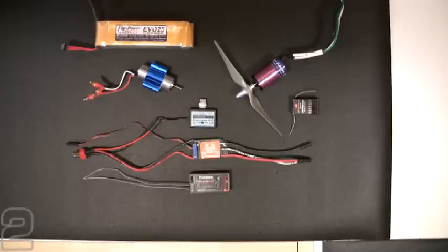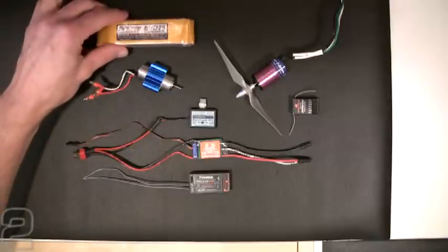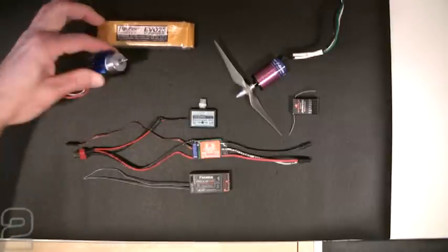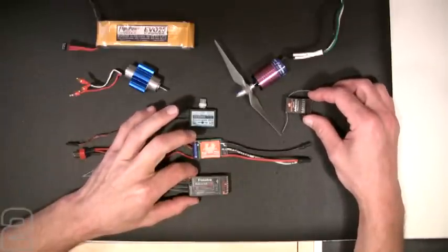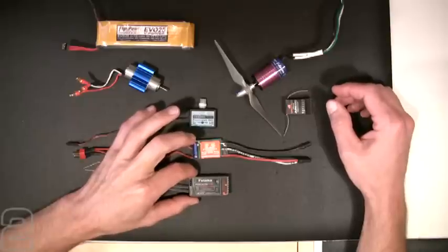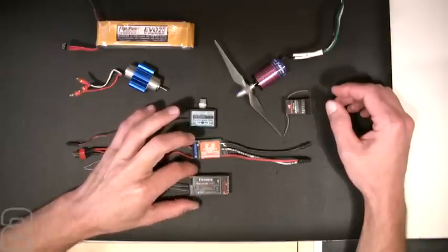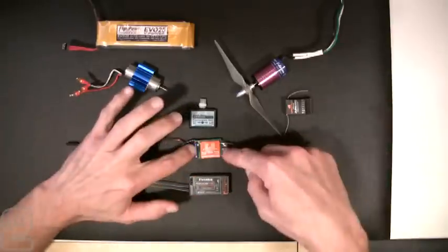So the basic components you typically have in an electric power plant are going to be your main flight battery, your brushless DC motor, your radio receiver - we have both the Spectrum AR6100 here and the Futaba R6008HS - and then also your ESC.